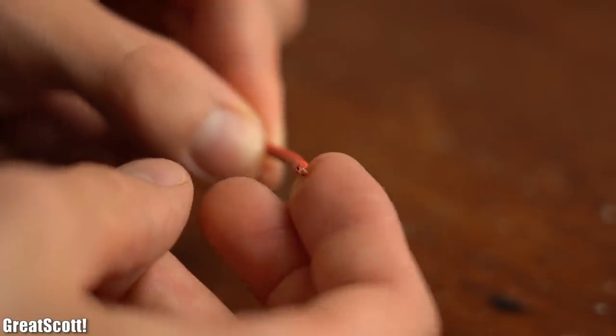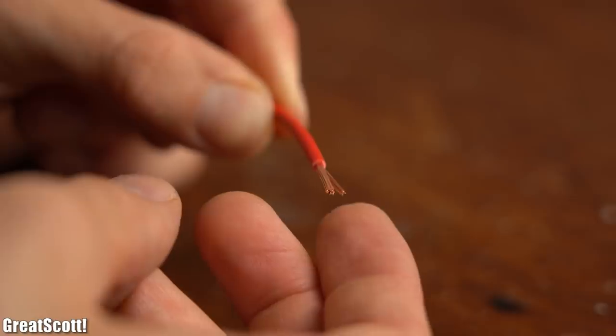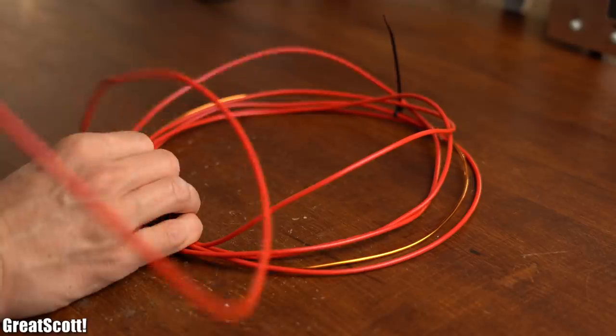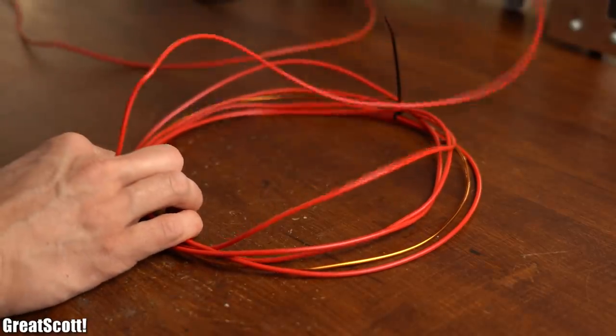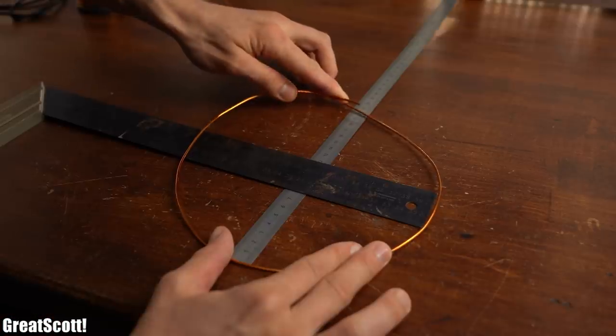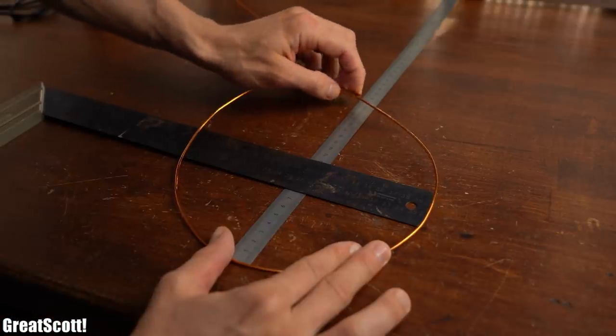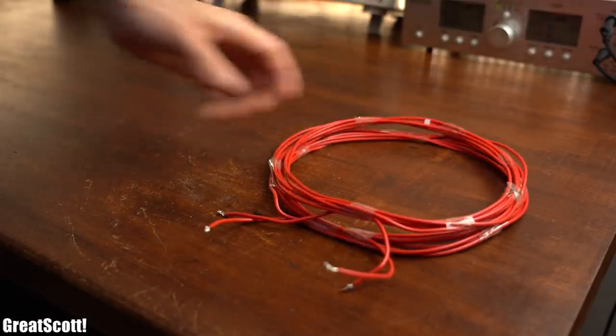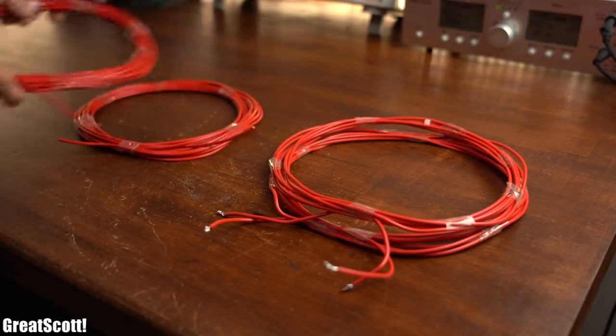I utilized stranded 1.5mm square wire to form the coils, which was not easy to do even when using a jig made out of thicker solid copper wire. But nevertheless, after a few trials and errors, I got my four coils.